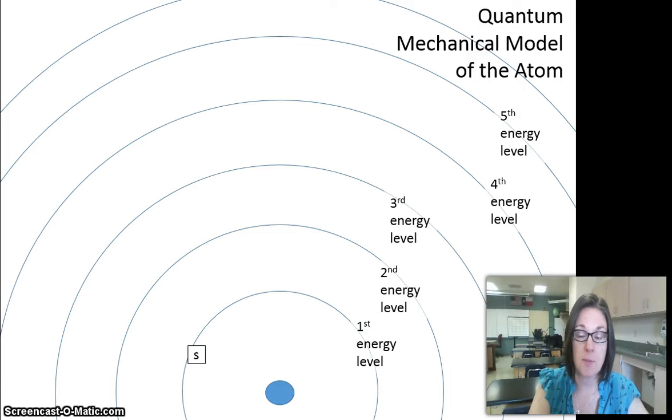The first energy level, being so small, only has one type of sublevel, and that's an S. The second energy level is a little bit larger, so it has the S but also a P sublevel.